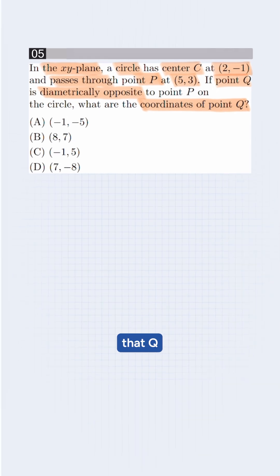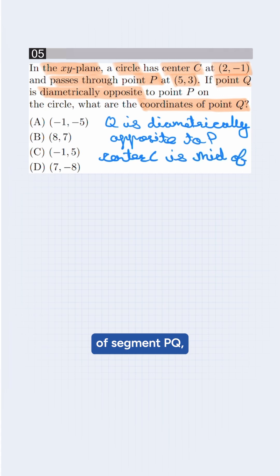Here we need to understand that Q is diametrically opposite to P. Then the center C is the midpoint of segment PQ. So we use the midpoint formula which is C equals x1 plus x2 by 2 comma y1 plus y2 upon 2.